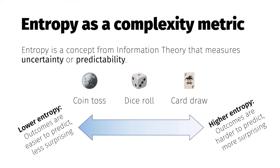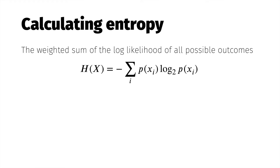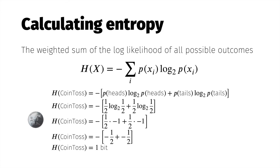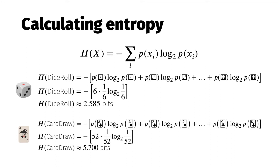Let's denote the entropy of a system x as H(x). It's defined as the weighted sum of the log likelihood of all possible outcomes for x. Take the coin toss: the probability of landing either heads or tails is 1/2. Plugging these values into the formula, we arrive at an entropy value of 1 bit, where a bit is simply defined as the amount of uncertainty associated with the choice between two equally likely outcomes.